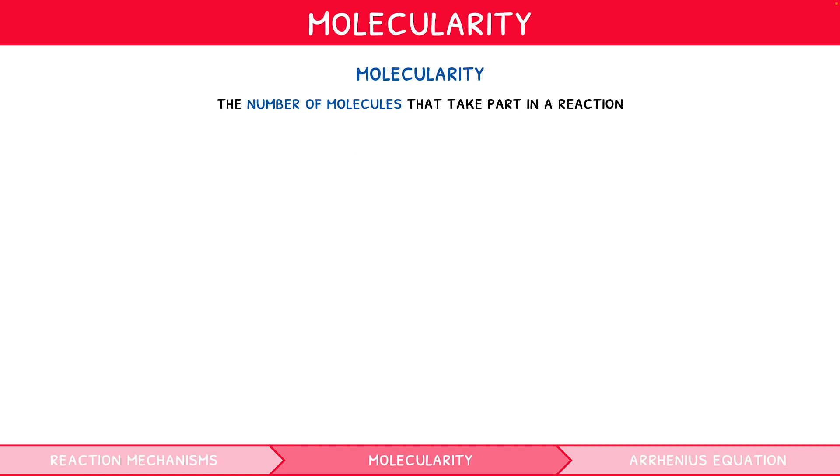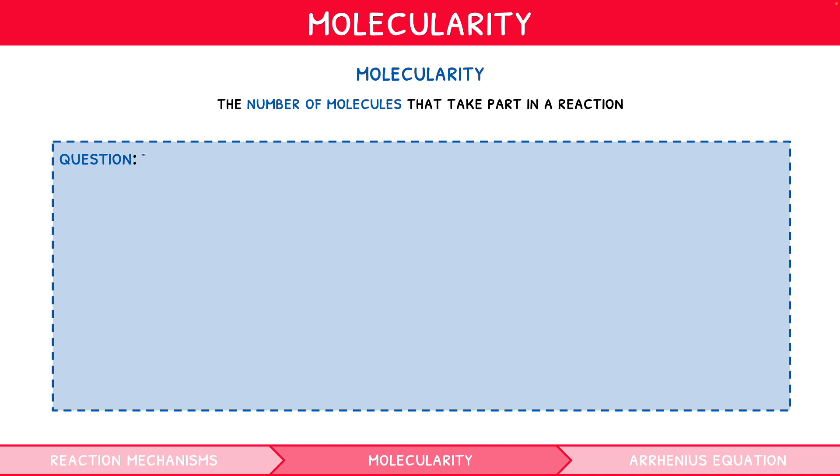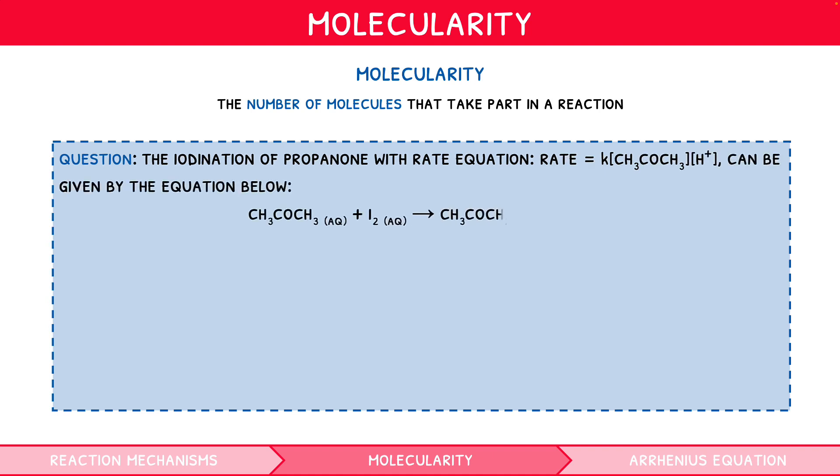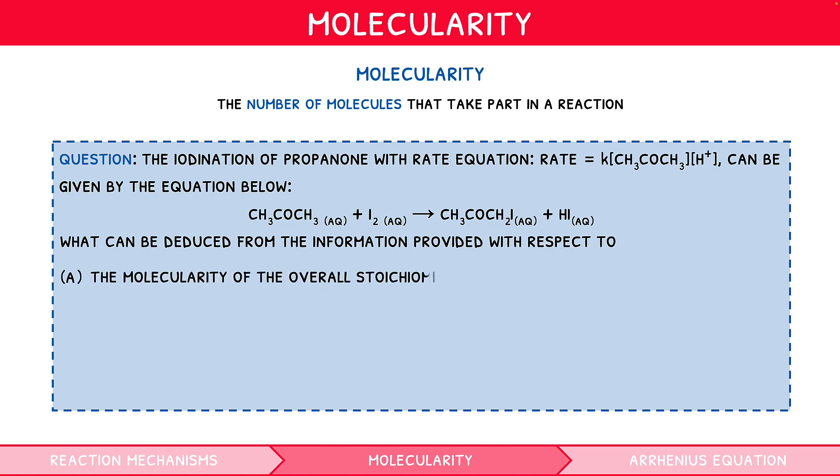Let's look at an example question. The iodination of propanone with a rate equation rate equals KCH3COCH3H+, can be given by the equation below. What can be deduced from the information provided with respect to A, the molecularity of the overall stoichiometric equation, and B, the reactants involved before, or within, the rate-determining step of the reaction mechanism.